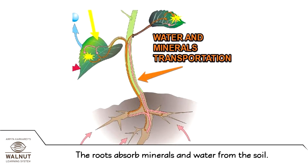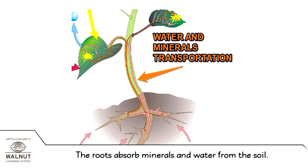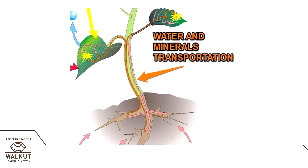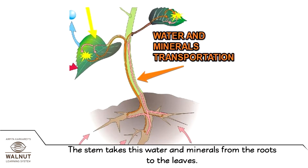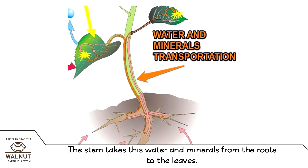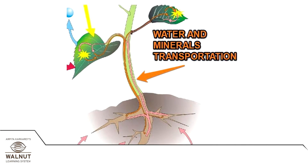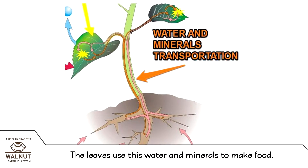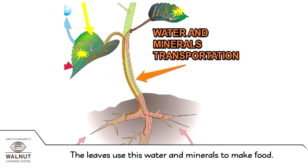The roots absorb minerals and water from the soil. The stem takes this water and minerals from the roots to the leaves. The leaves use this water and minerals to make food.